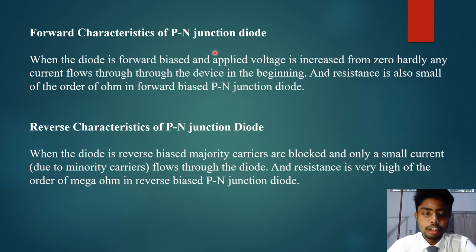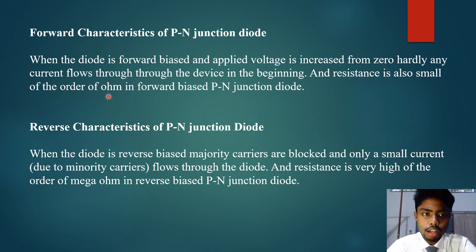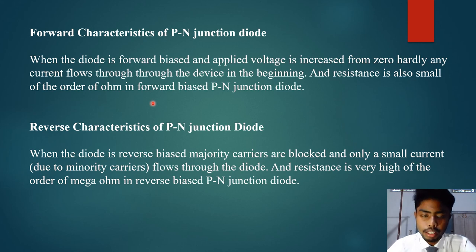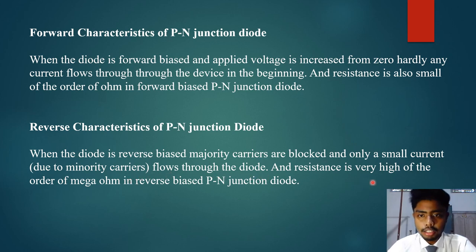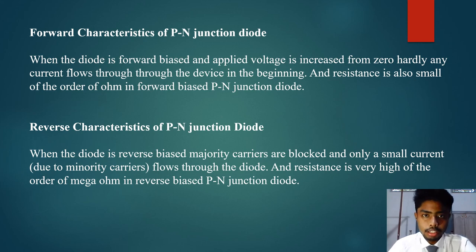When the diode is forward biased — P side positive and N side negative — the applied voltage is increased from zero and initially very little current flows through the device. The resistance is small, of the order of ohms, in forward bias. When connected in reverse bias — P side negative and N side positive — majority carriers are blocked and only a small current due to minority carriers flows through the diode. Resistance is very high, of the order of megaohms, in reverse bias.